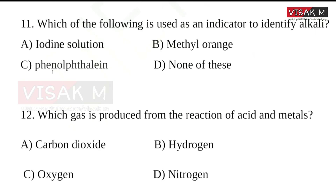Which of the following is used as an indicator to identify alkaline? Options: Hydrangea, Orange, Phenolphthalein, None of this.